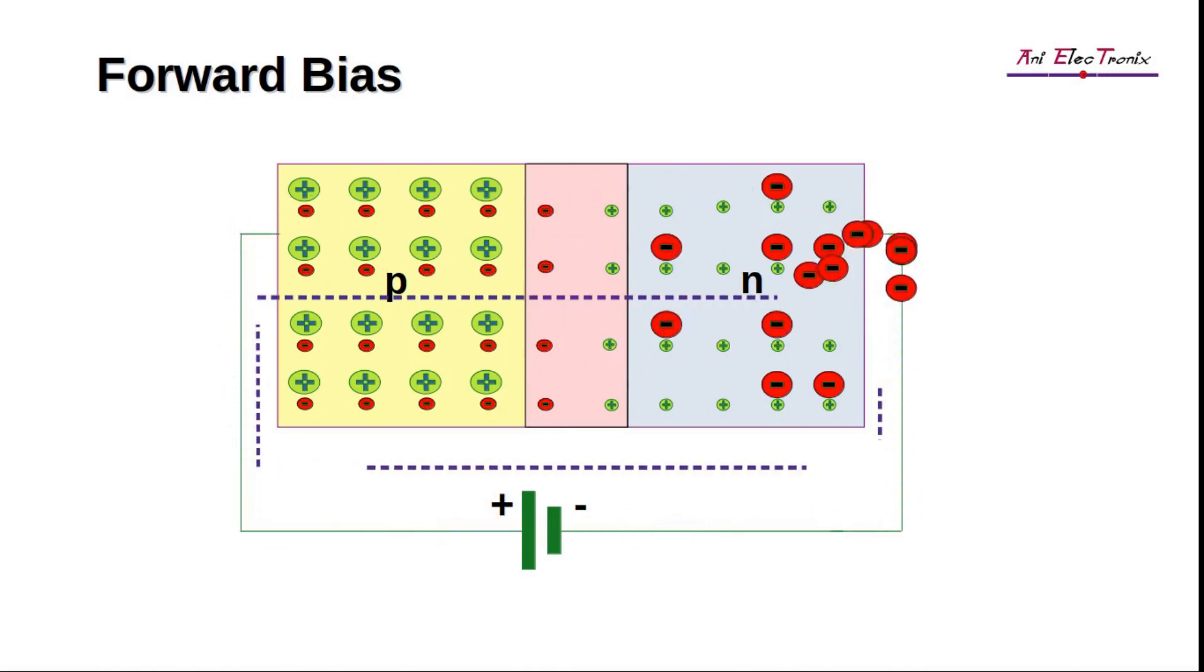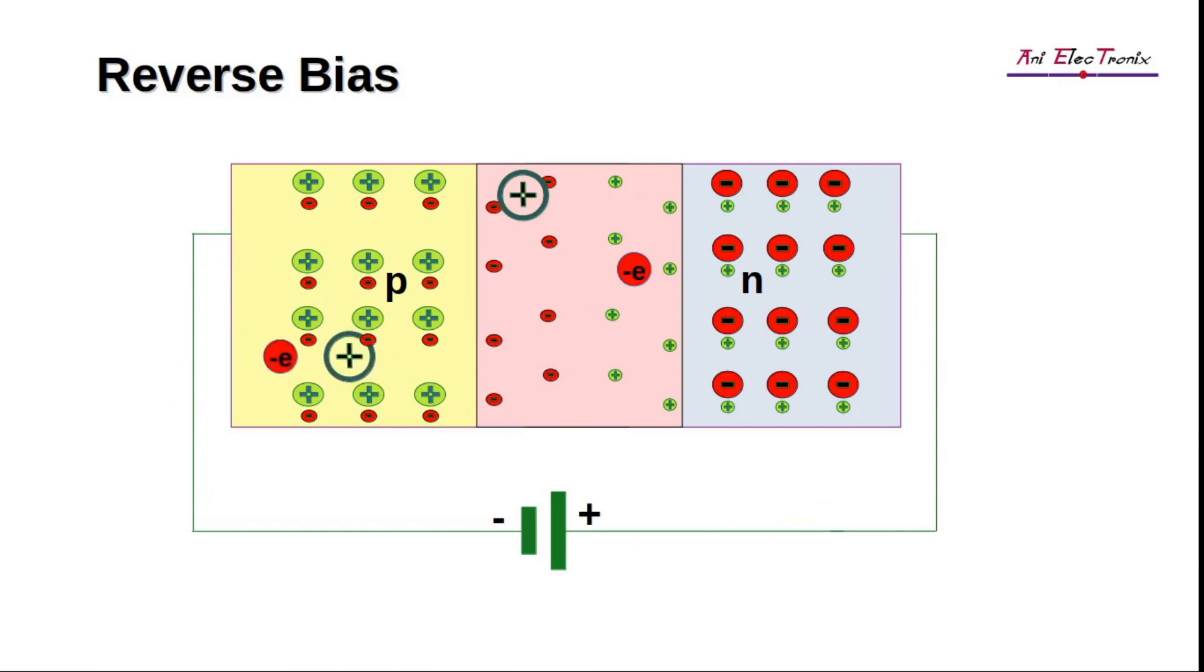We learned in episode 9 the switching characteristics of a P-N junction diode, that while in forward biased mode, it provides a large amount of current, while in reverse biased mode, it provides a negligible amount of current due to the reverse saturation current.